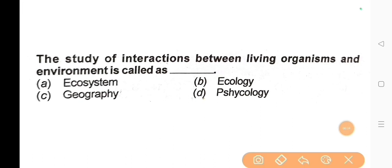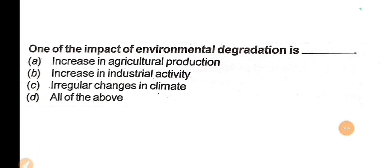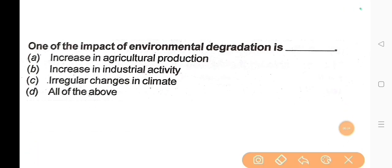Next question: The study of interactions between living organisms and the environment is called? The correct answer is Option B: Ecology. Next question: One of the impacts of environmental degradation is? The correct answer is Option C: Irregular changes in climate.